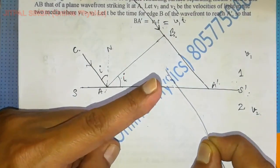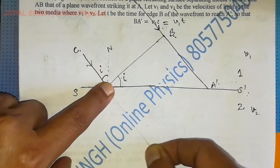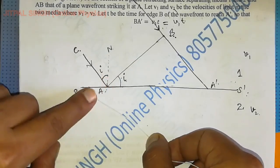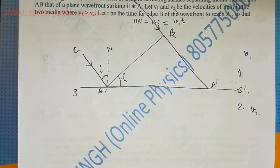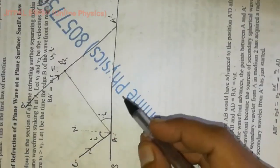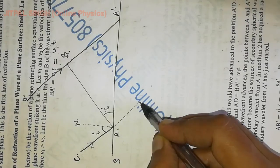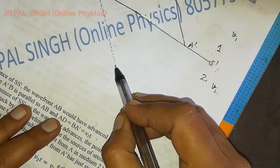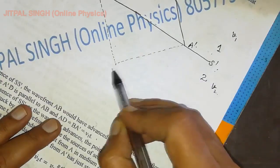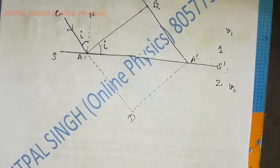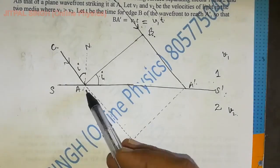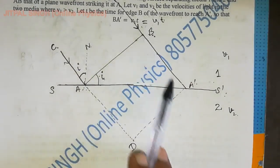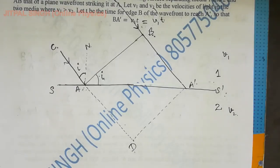I'll treat this initial point as point A, then make an arc. When I make the arc I get point D. Make sure the line along the thread is parallel to BA', so I draw a dotted line parallel to BA'. Joining A' to this point gives D. In the absence of SS', AB would have advanced to position A'D, and AD = BA' = v1·t.